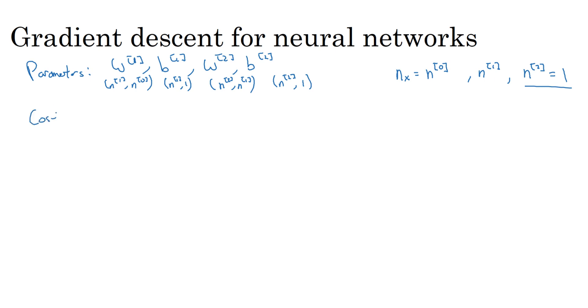So you also have a cost function for your neural network. And for now, I'm just going to assume that you're doing binary classification. So in that case, the cost of your parameters is going to be 1 over m of the average of that loss function. And so l here is the loss when your neural network predicts y hat. This is really a 2, when the ground truth label is equal to y. And if you're doing binary classification, the loss function can be exactly what you use for logistic regression earlier.